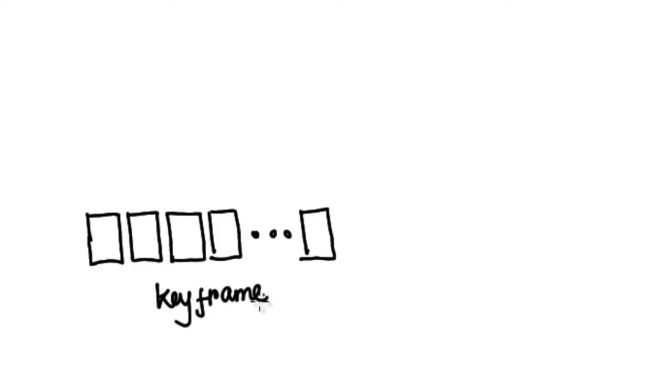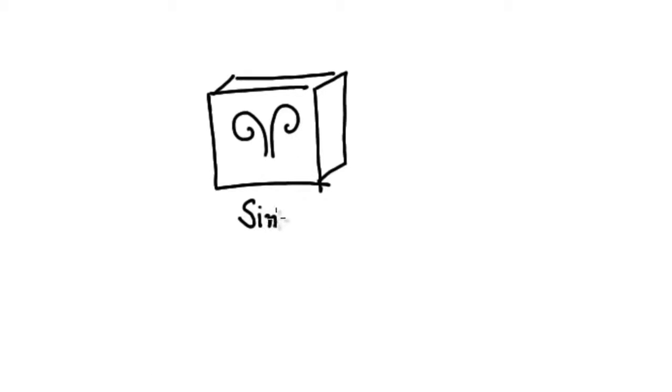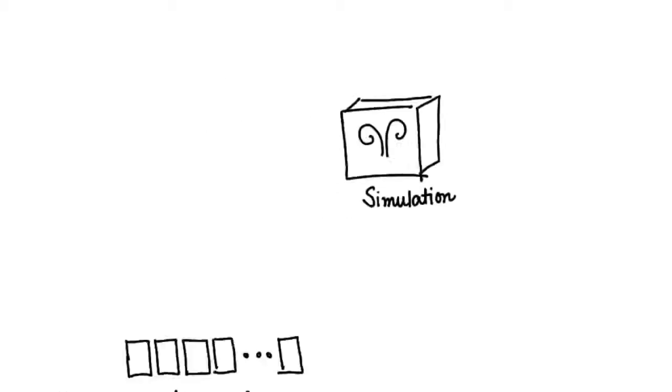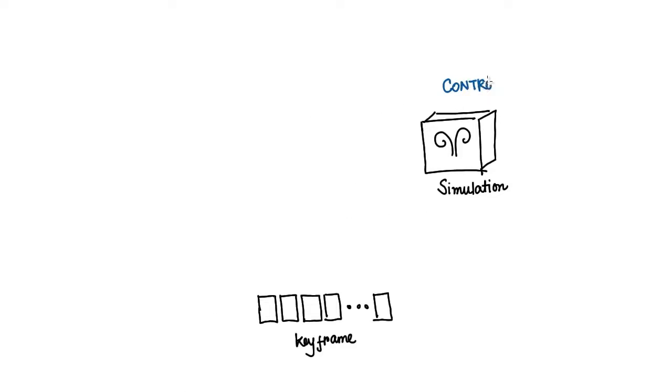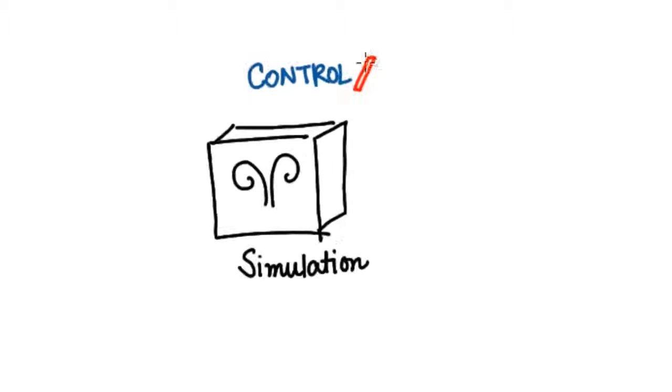Traditional frame-by-frame hand-drawn animation offers full artistic control but requires significant expertise and manual labor. On the other hand, physical simulations can produce realistic animation but they are hard to control and stylize.